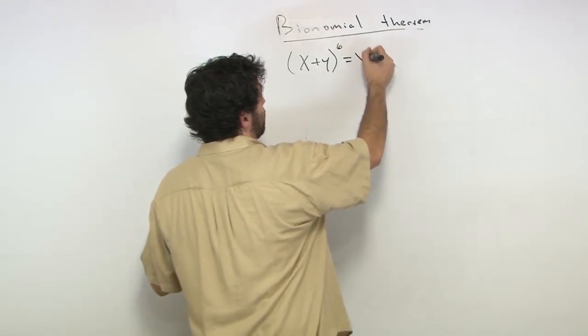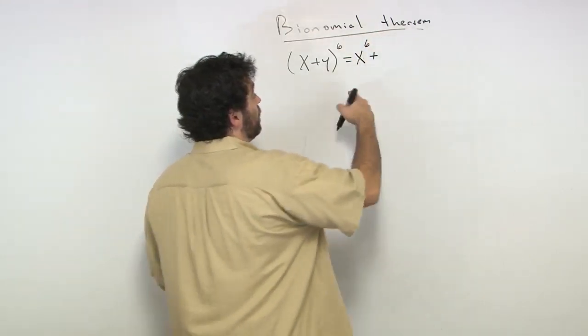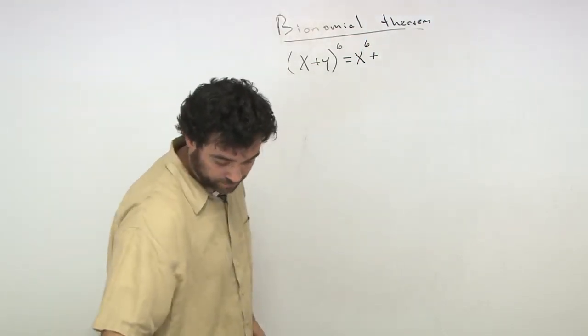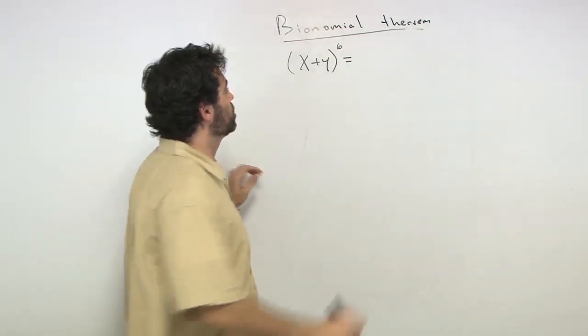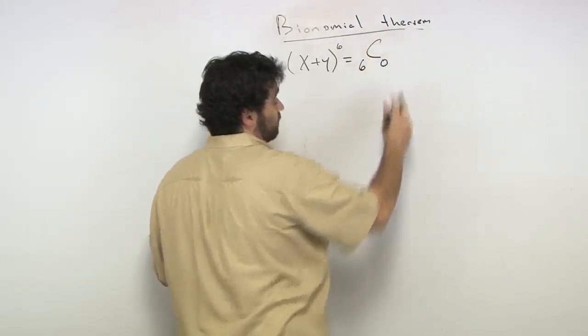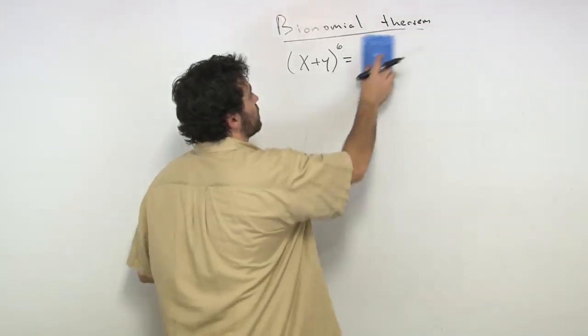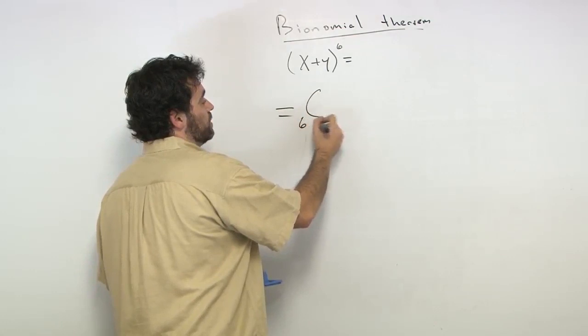I know it starts out with x to the 6 plus. Now, start out, we know that, I don't want to cheat the problem. We say that 6c0, our first term is going to give us, and let's write this underneath, because I know it's going to be long, so I'm going to write it down. I'm going to say 6c0.